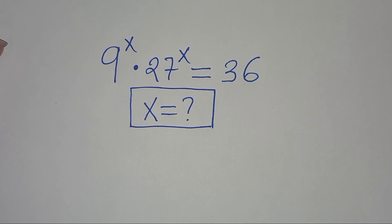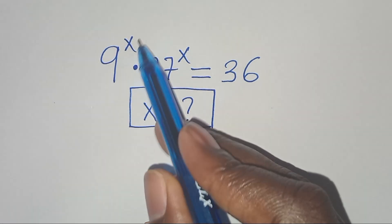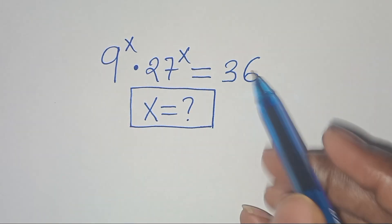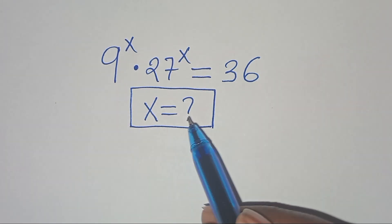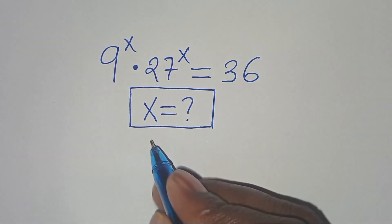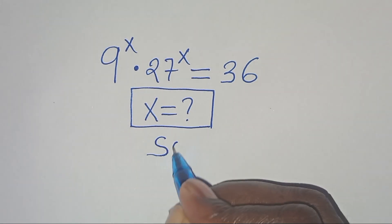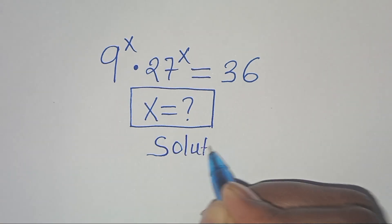Welcome. Let's solve this exponential equation: 9 to the power of x times 27 to the power of x equals 36. What is the value of x? Let's provide a solution.